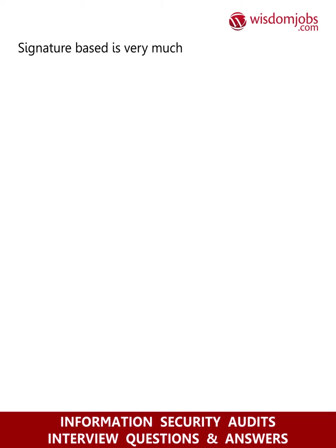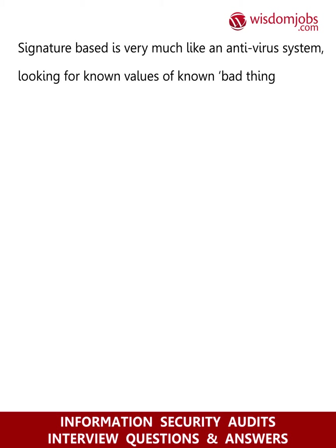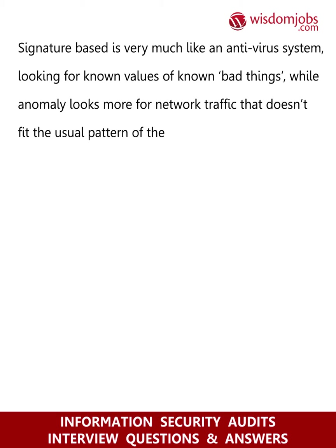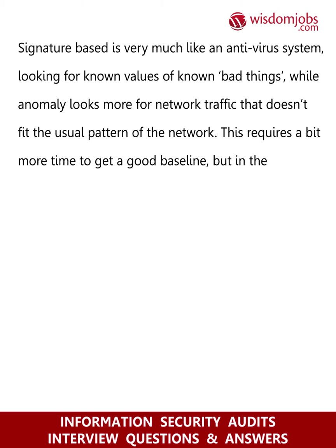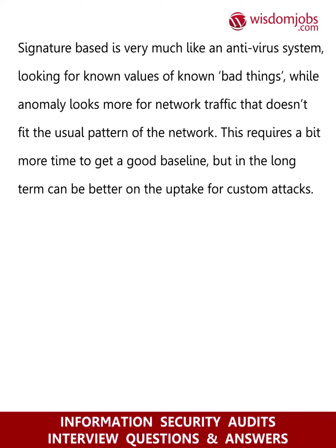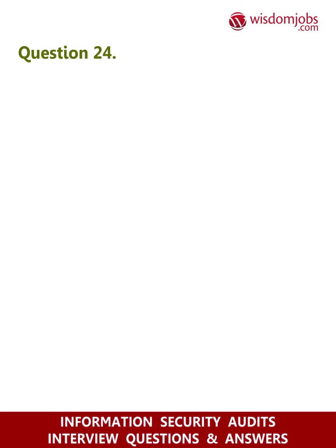Both systems have two basic variants: signature-based and anomaly-based. Signature-based is very much like an antivirus system, looking for known values of known bad things, while anomaly-based looks more for network traffic that doesn't fit the usual pattern of the network. This requires a bit more time to get a good baseline, but in the long term can be better on the uptake for custom attacks.